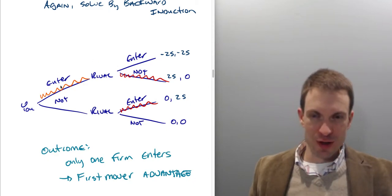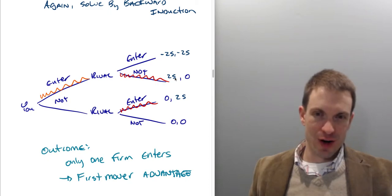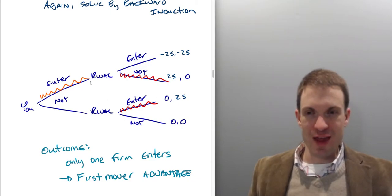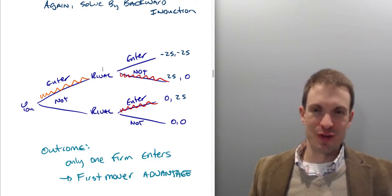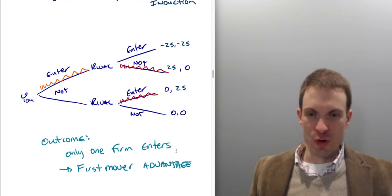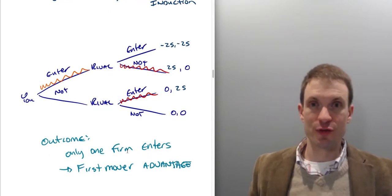Wrapping back to the beginning of the game, what am I going to do? Looking forward, I see if I enter, I'm going to get $25,000. If I don't enter, I'm going to get $0. So I'm going to enter, and the rival is going to figure this out and then decide not to enter. So the outcome here is going to be $25,000, $0. Here, only one firm enters. That's going to be the equilibrium, only one firm in equilibrium, and there's a first mover advantage.